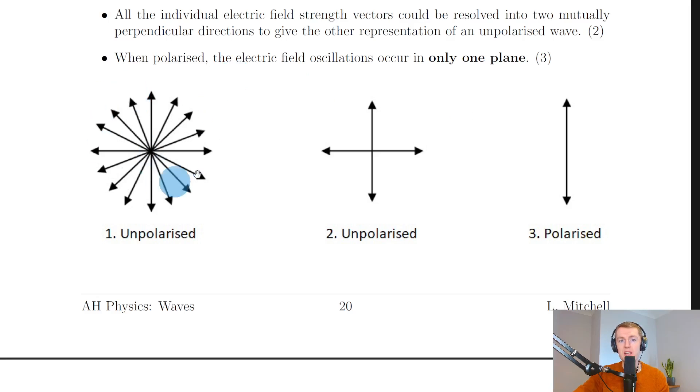So just to recap, unpolarised light has electric field oscillations in every plane, whereas polarised light, which we often call plane polarised light, has electric field oscillations in one plane only.